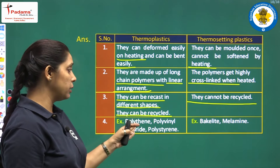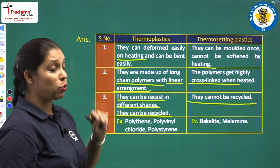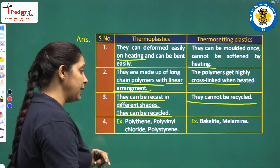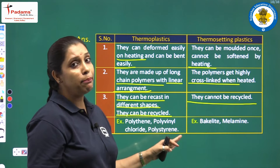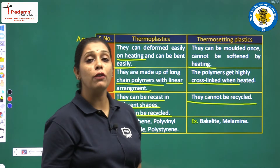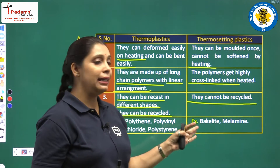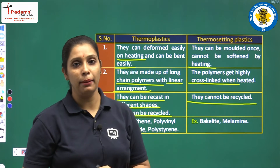Examples of thermoplastics are polythene, polyvinyl chloride — we also call this PVC — and polystyrene. Examples of thermosetting plastic are bakelite and melamine.